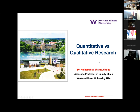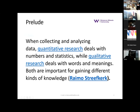I will try to stick on the quantitative and qualitative things. In a very simplified way, whenever you are talking about quantitative research, it deals with numbers and statistics or mathematics. The second thing is very critical — qualitative research deals with words and meaning.